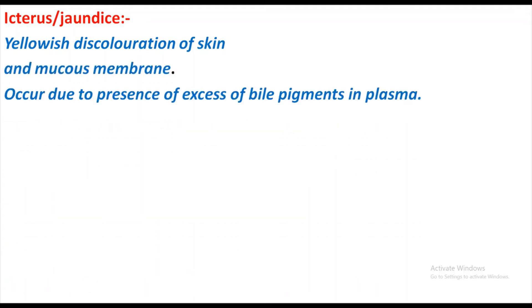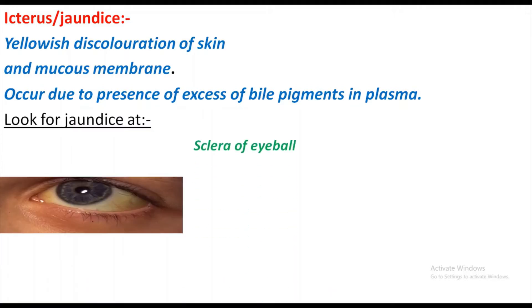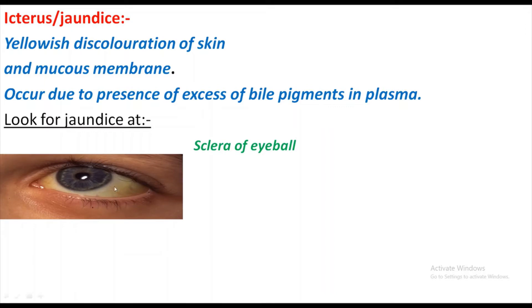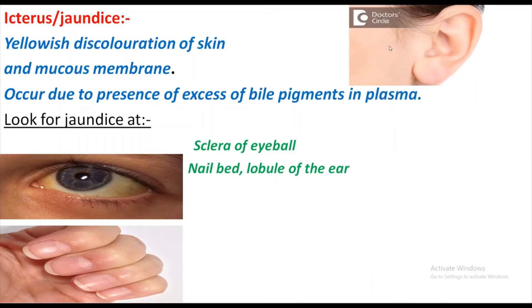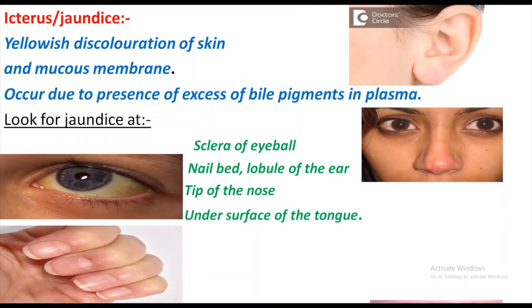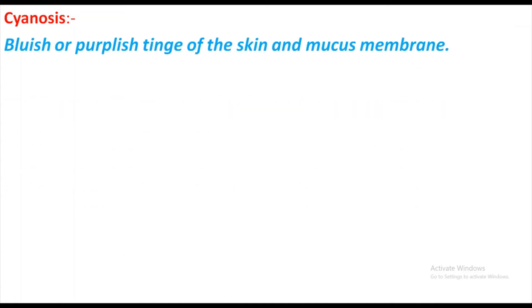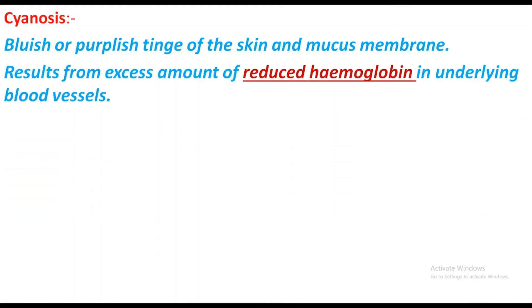Jaundice is yellowish discoloration of the skin and the mucous membrane. It occurs due to the presence of excess bile pigment in the plasma. Where to look for jaundice: the sclera of the eye, the nail bed, the lobule of the ears, the tip of the nose — that is an important site — and the under surface of the tongue, which is also an important site.